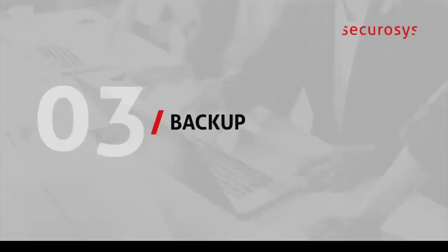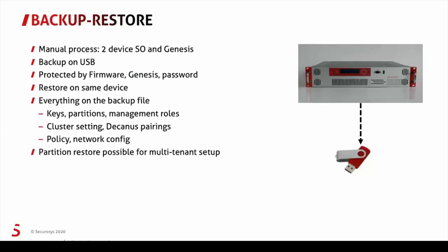Now we talk about the backup. In a backup, you create a file outside of the HSM onto a USB device. You need to be two device security officers and the Genesis Card to do that operation. The file on the USB is protected by firmware, Genesis, and the password. You can restore the backup file onto the same device. Everything on the HSM is in the backup file — also the management roles, the network settings, the cluster settings, the Decanos pairings, everything.